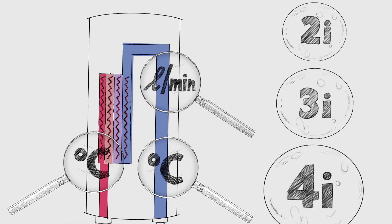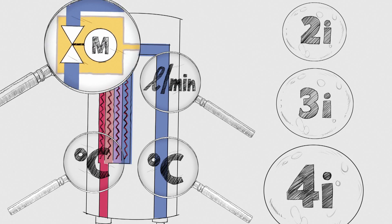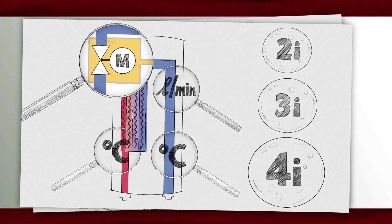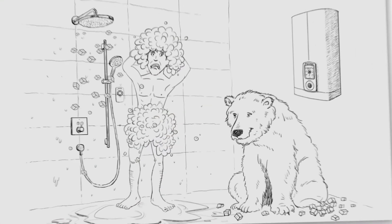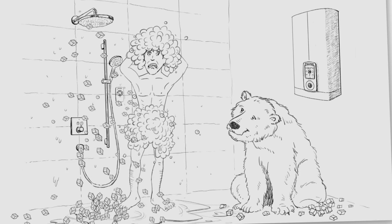4i technology additionally regulates the water volume automatically. A motorized valve adjusts the flow rate when the maximum output of the appliance has been reached. This way, the fully electronic instantaneous water heater maintains exactly the right temperature and offers maximum comfort. No more cold shocks in the shower.